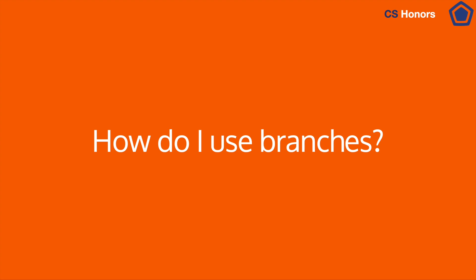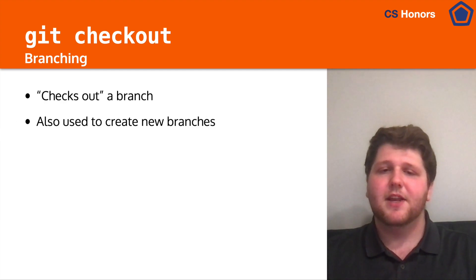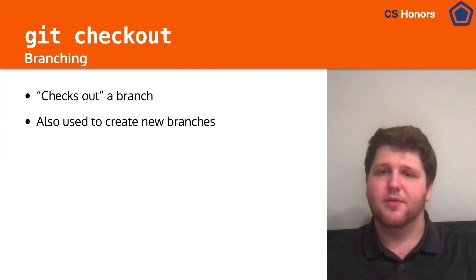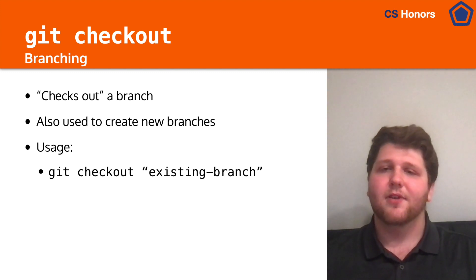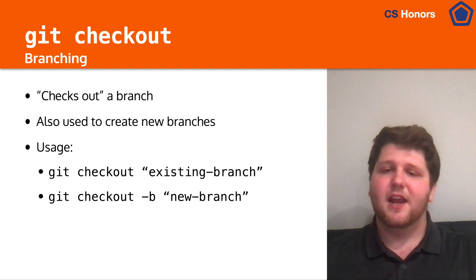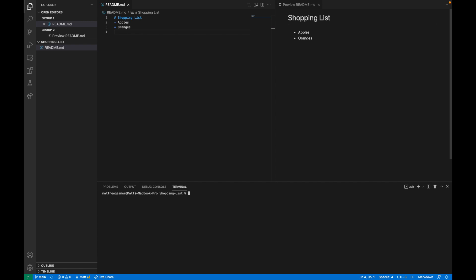Let's show how you can use branches and then how you can clean up a merge conflict in your environment. With git checkout we can check out a new branch, and we can also create a new branch. We can either move to an existing branch by providing the branch name, or we can use the -b flag to create a new branch. Git checkout -b will say, if one doesn't exist, let's go create a new one. So we're back in our shopping list environment and we're going to show how to check out and create new branches using Git.